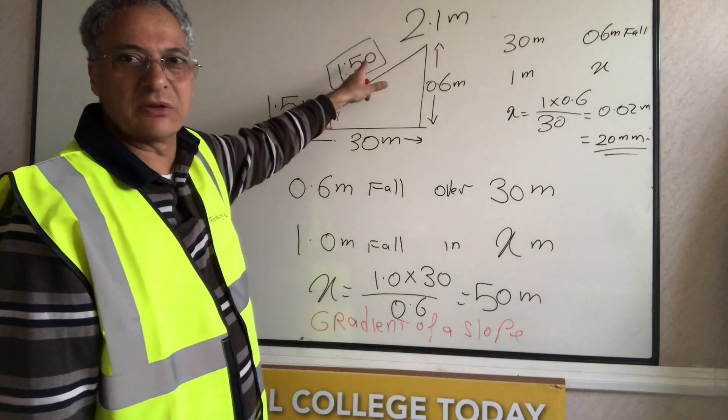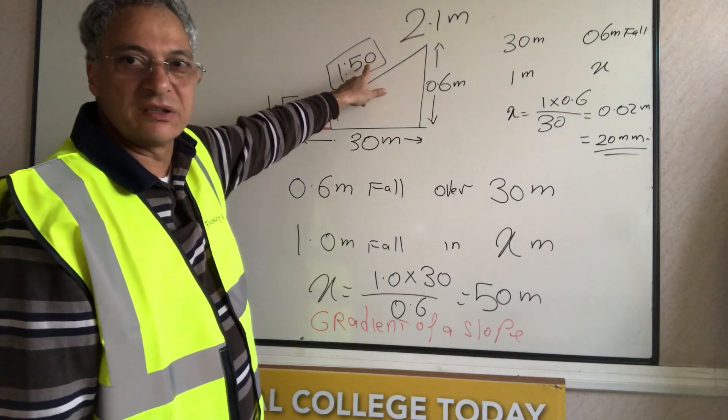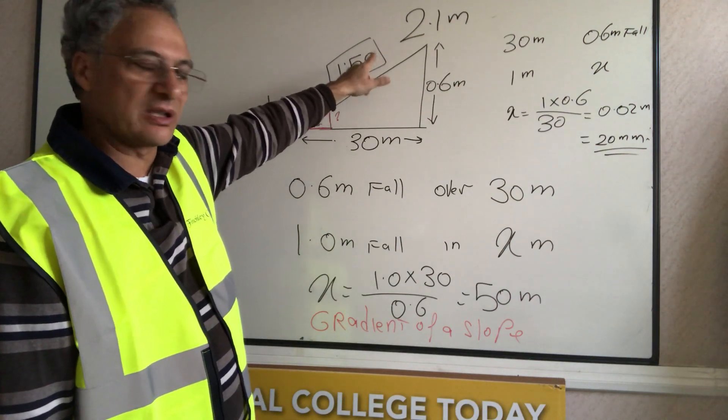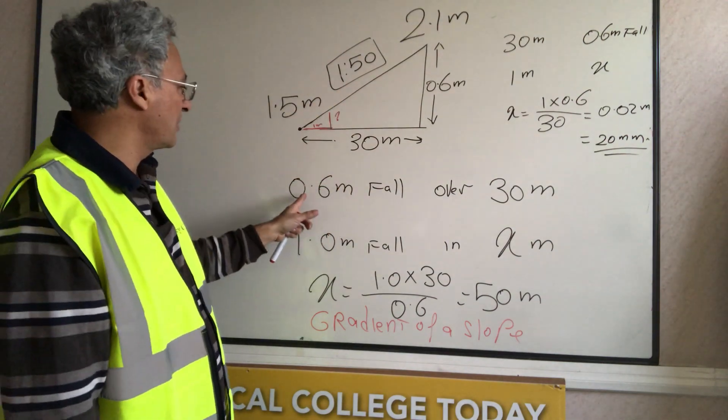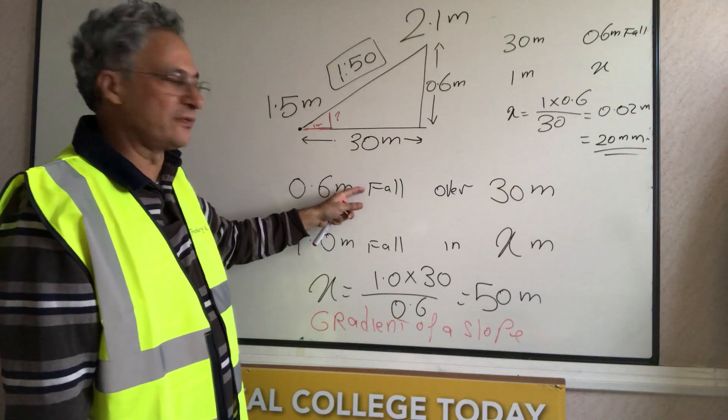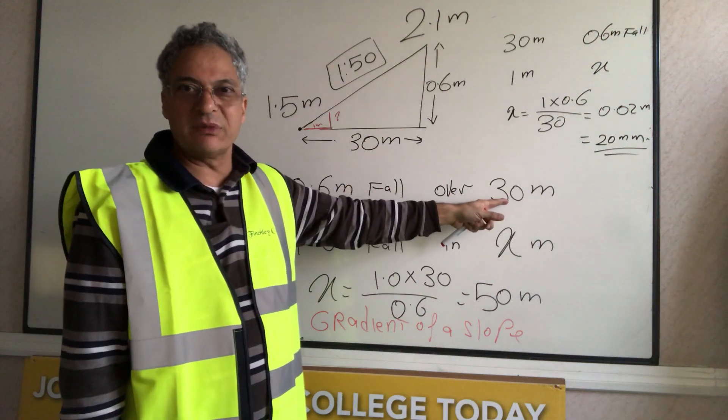What I wanted to calculate is the gradient, which is 1 in 50, but I need to calculate that. To calculate that, I write this formula. It's a simple formula. I write the fall, 0.6 meters of fall over 30 meters.